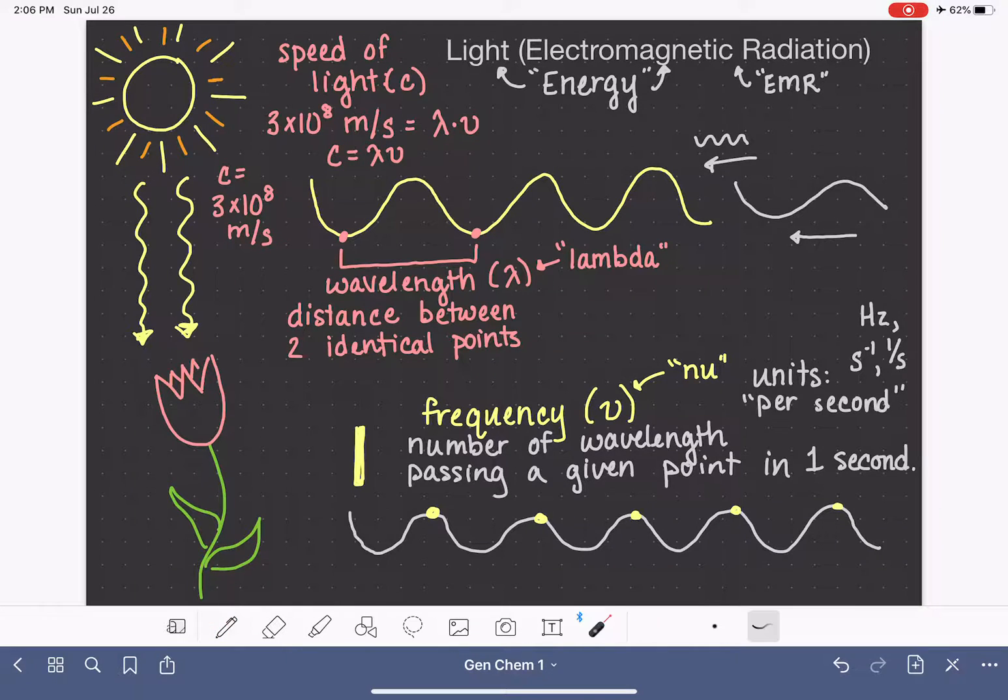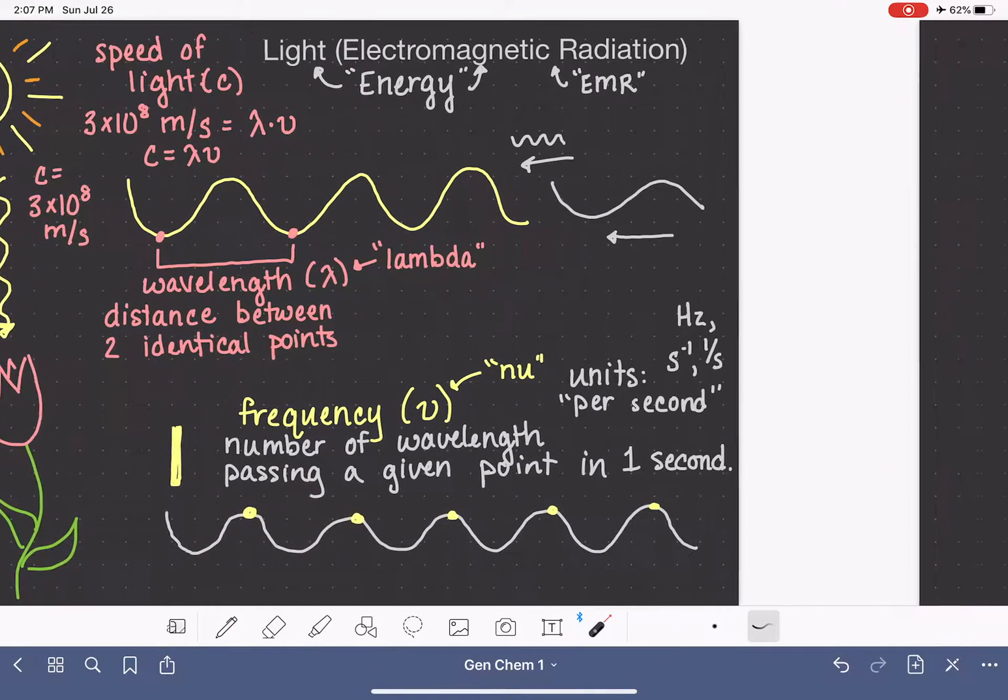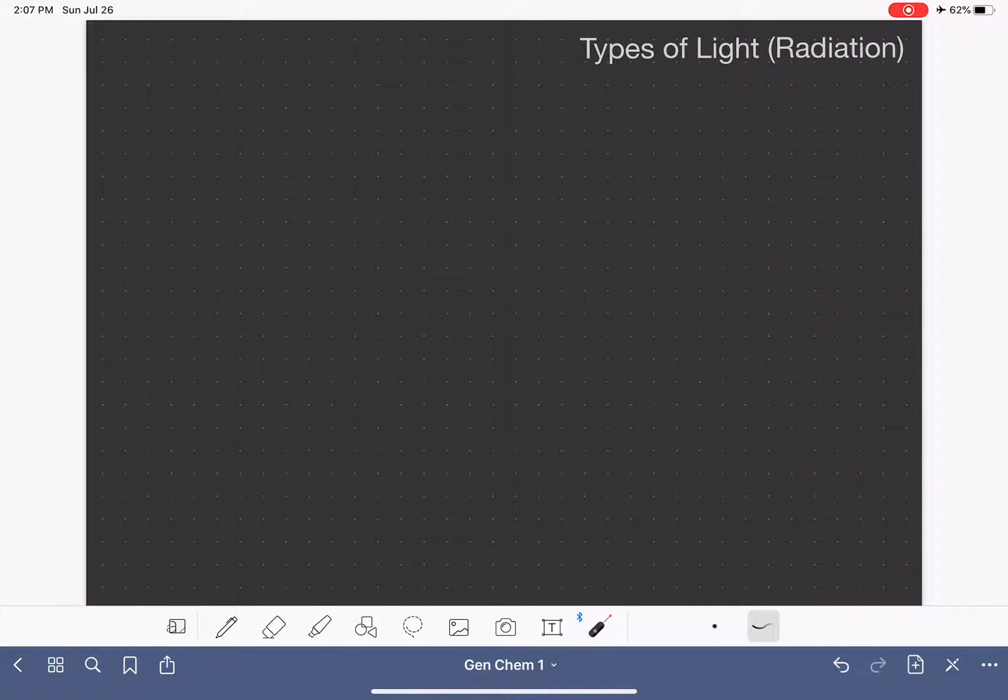So as I mentioned, even though light has a uniform speed, light does not all have the same wavelength, and it does not all have the same frequency. The frequency and wavelength of light varies depending on the type of light. So what we're going to do is chart out the different types of light, the different types of energy, or the different types of electromagnetic radiation. We're going to make a line and on this line, I'm going to plot all the different types of energy.